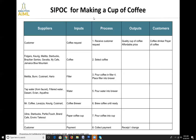When we draft a SIPOC, we start not with suppliers, inputs, process, outputs, and customers going from left to right — we actually start in the middle at process. Everything builds upon your process. In this case, we have a cafe where we're making coffee: a customer comes in, they request a cup of coffee, we receive that request, select the coffee, pour it into the filter, place the filter into the brewer, pour the water in and brew until ready, then pour the coffee into the cup, serve it to the customer, and collect payment. Those are the eight high-level process steps in the middle of this chart.